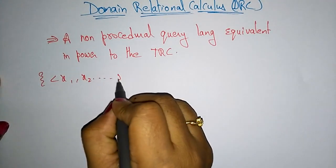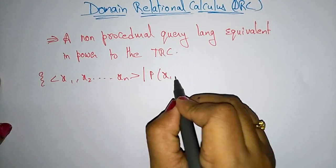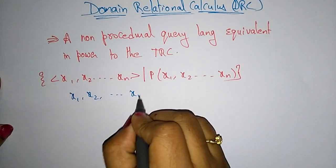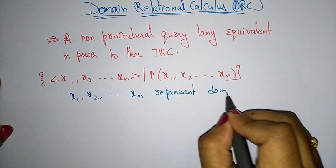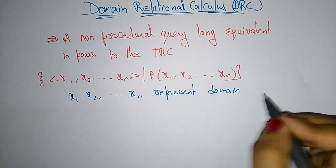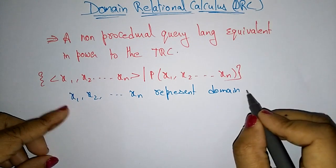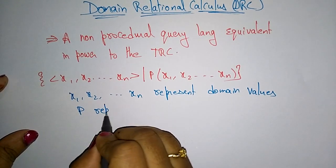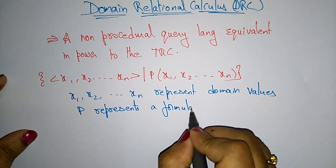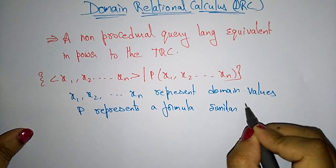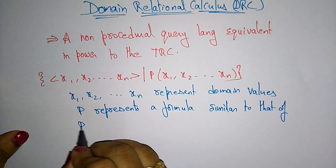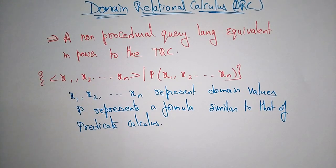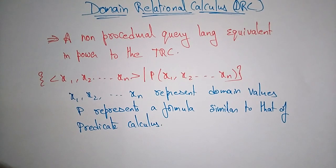The domain relational calculus takes the form: { x1, x2, ..., xn | P(x1, x2, ..., xn) }. Here x1, x2, up to xn represent domain values — those are the values that are present in the particular attribute, in the cell of the table. P represents a predicate formula, similar to that of predicate calculus.